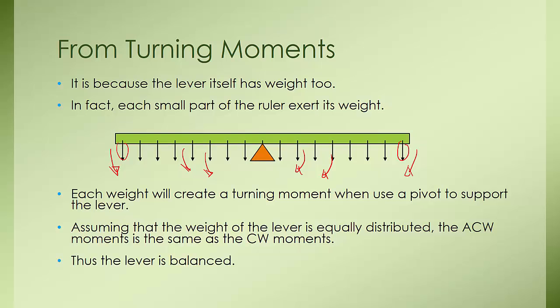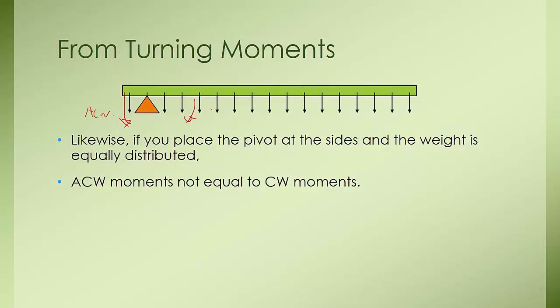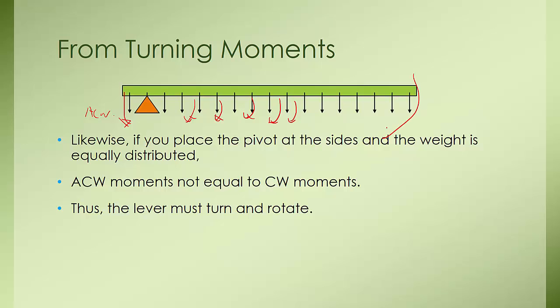However, if you place the pivot at the side and the weight is equally distributed, you see that the anticlockwise moments will not be equal to the clockwise moments — there is less anticlockwise moment compared to the clockwise moment. There are so many clockwise moments that the lever must turn and rotate. If you place your pivot over to one side, the whole thing will actually turn clockwise.